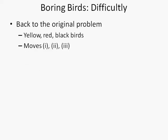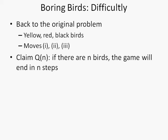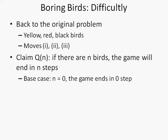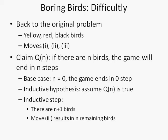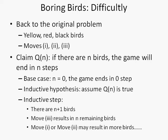If we go back to the original problem, there are three kinds of birds and three types of moves. Let's try to prove Qn, which is if there are n birds, the game will end in n steps. The base case is n equals 0 and the game ends in 0 steps. The inductive hypothesis is we assume Qn is true. The inductive step: there are n plus 1 birds and move 3 results in n remaining birds. However, move 1 or move 2 may result in more birds. At this point, we find we cannot continue the proof.